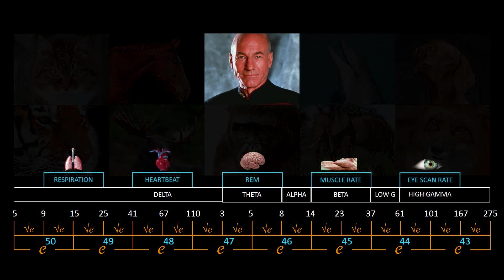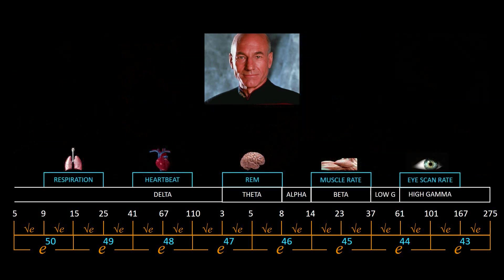Naturally, the frequency ranges of our respiration and heartbeat also follow a multiplicative sequence of Euler's number and its square root. This is valid also for the frequency ranges of our muscle vibration and our eye scan rate — more precisely, the flicker fusion threshold.